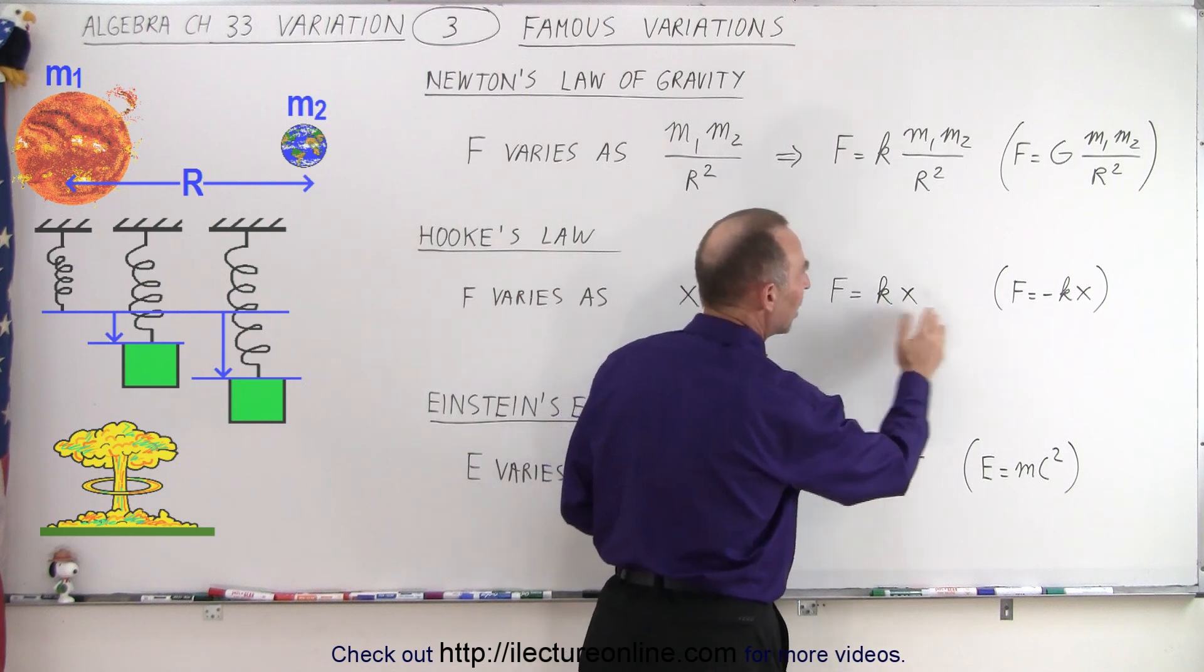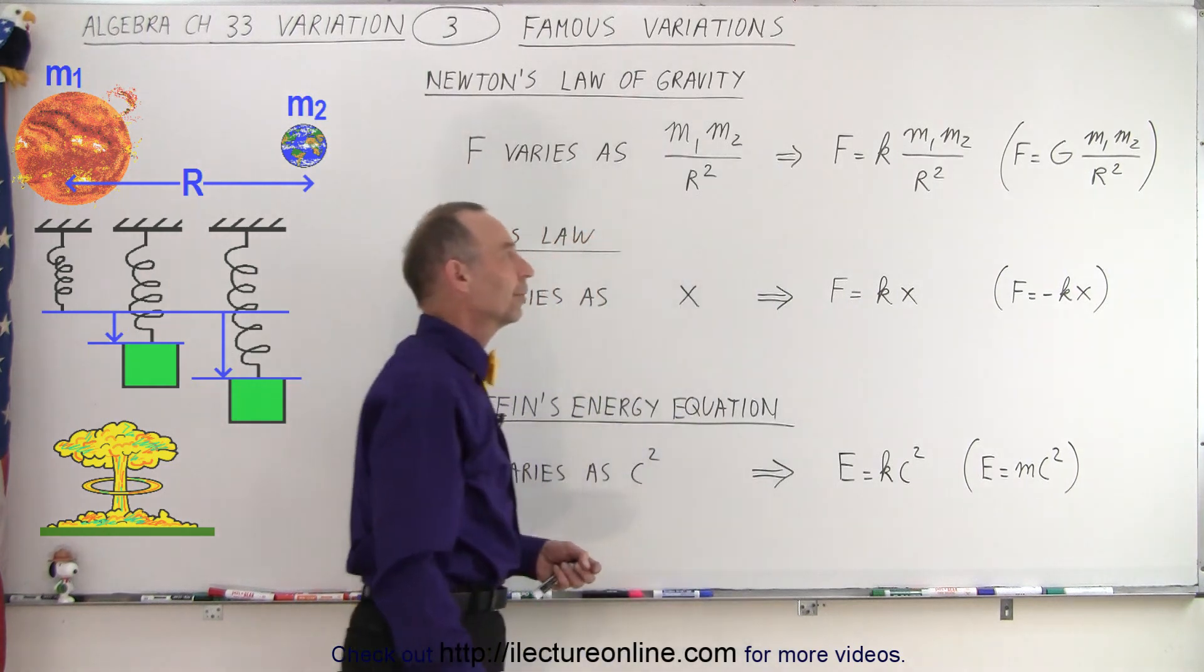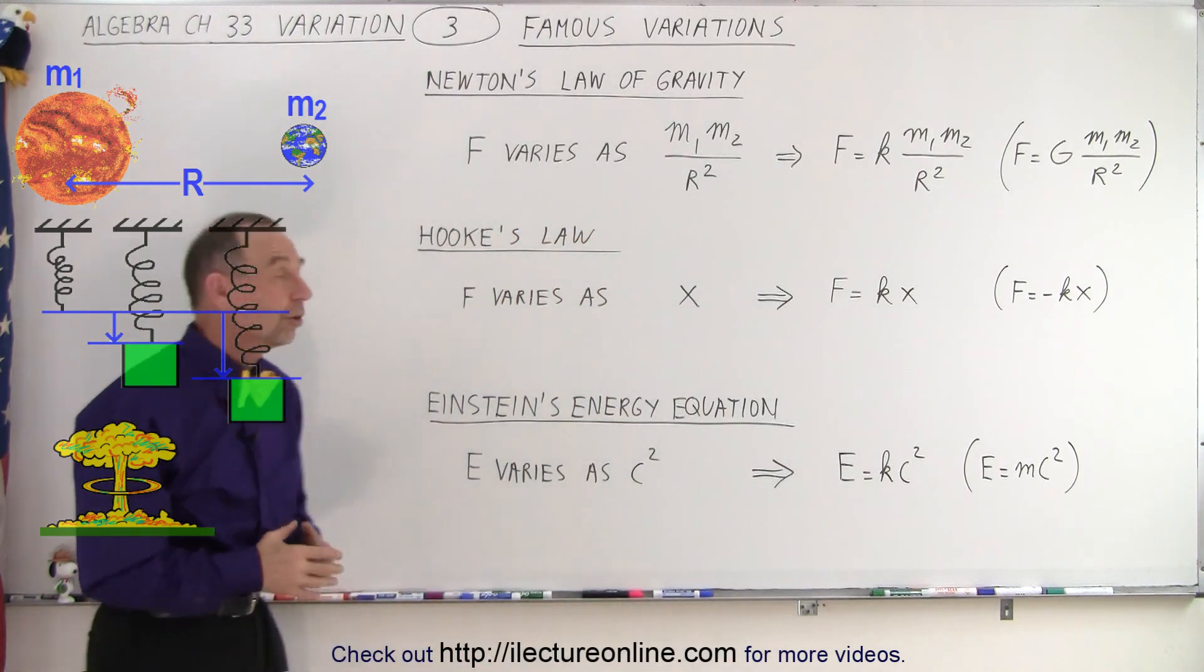the constant K was the mass of the object. Here, the constant K was the spring constant, and here, the constant K was the universal gravitational constant.